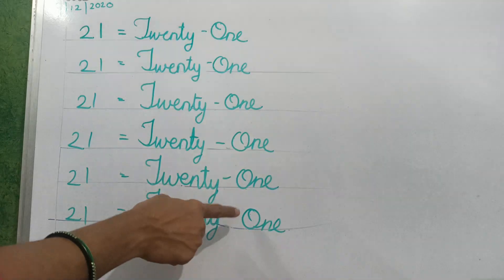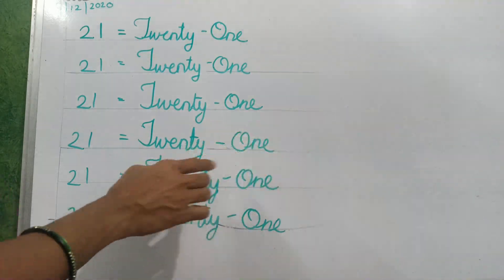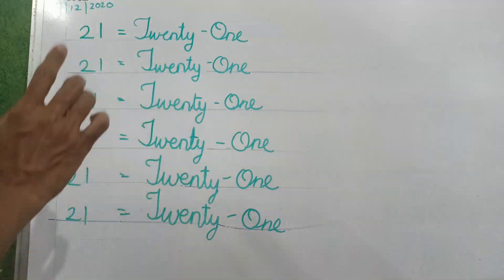You have to write O capital and baki N is small. T capital, baki sab small. Okay. Achcha se likhna hai, samajna hai. Okay. And while writing you have to speak loudly. Okay.